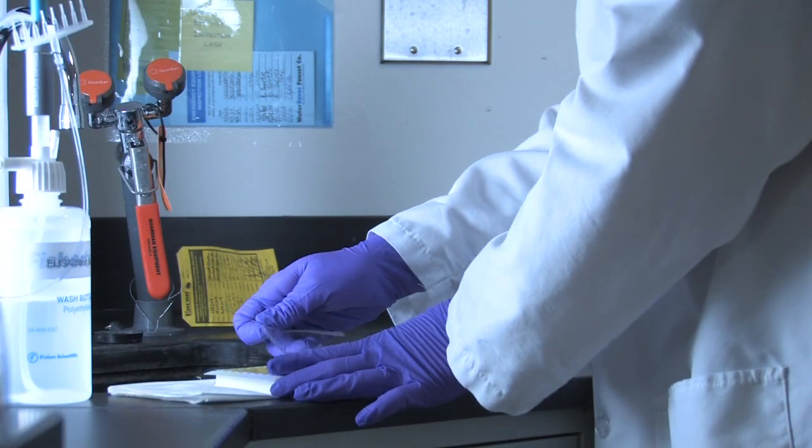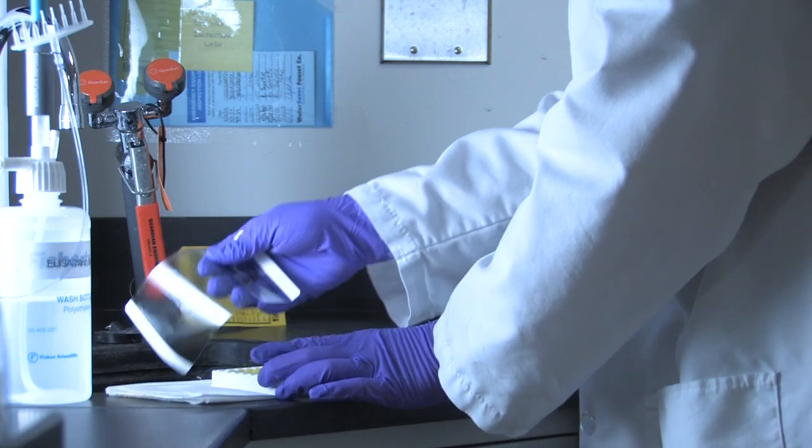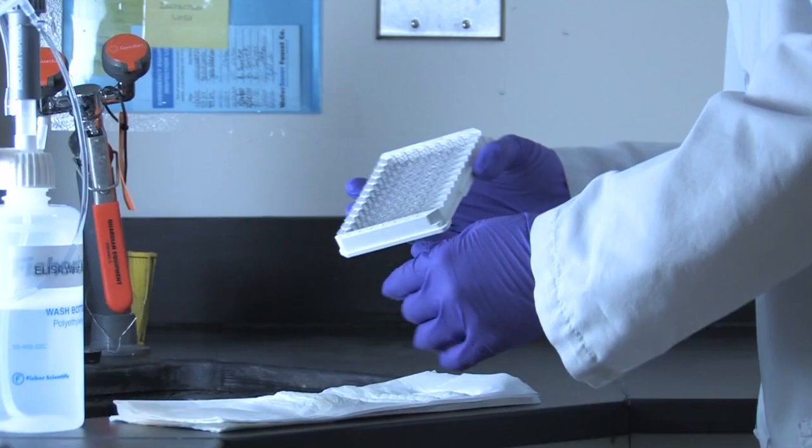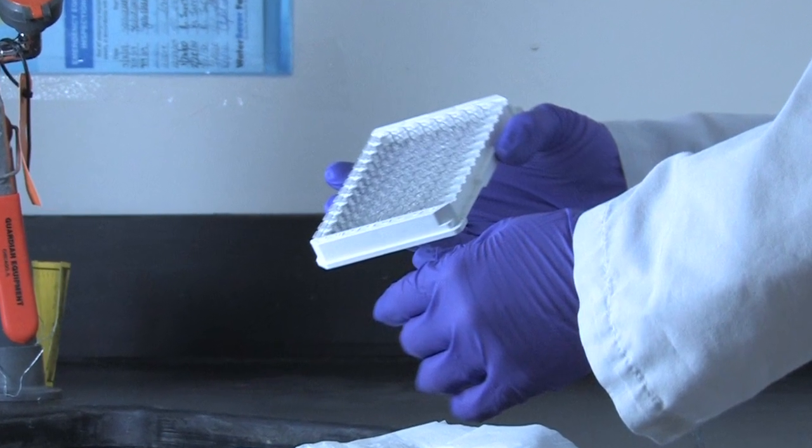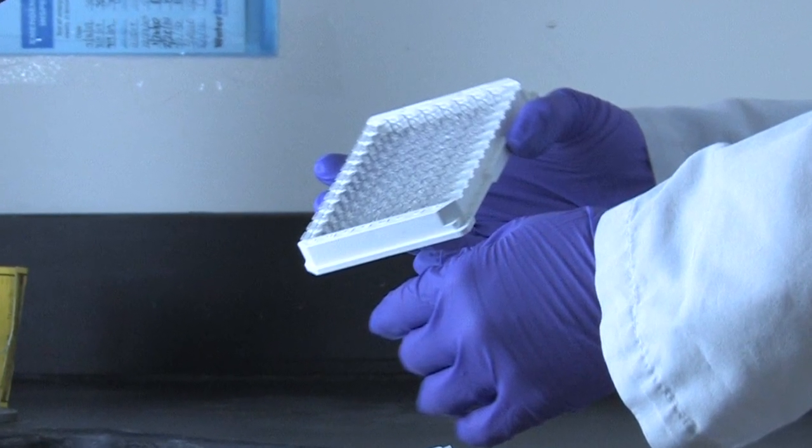If necessary, remove the plate sealer or covering that was used in the previous step of the assay. Firmly grasp the center tabs of the plate frame to ensure strips will not fall out of the frame during discard and drying.